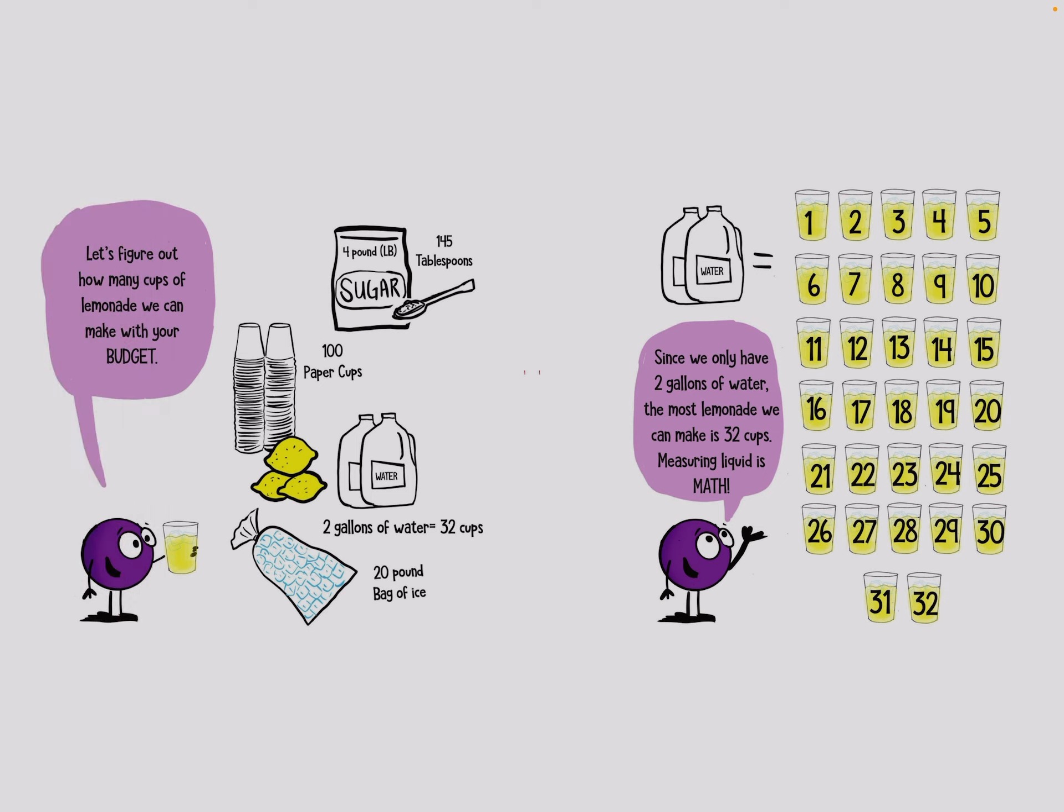Let's figure out how many cups of lemonade we can make with your budget. Since we only have two gallons of water, the most lemonade we can make is 32 cups. Measuring liquid is math.